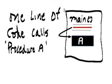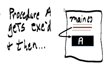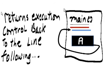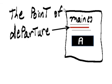One line of code calls Procedure A. Procedure A gets executed and then returns execution control back to the line following the point of departure.